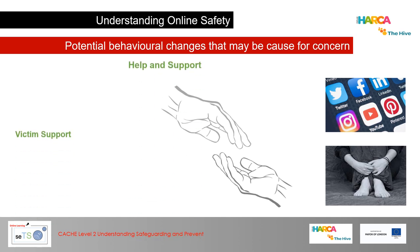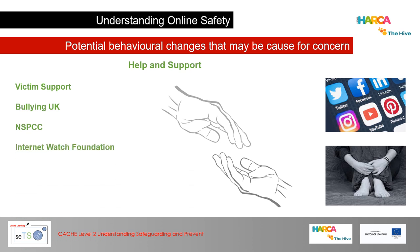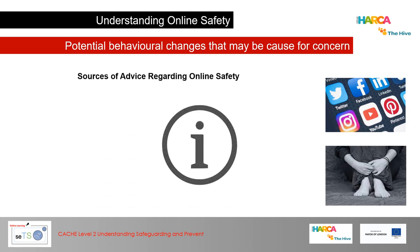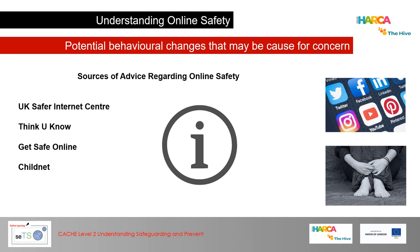Some help and support organisations include Victim Support, Bullying UK, the NSPCC, the Internet Watch Foundation, Revenge Porn Helpline, Childline and the Cyber Foundation — all very good charities to help people in these circumstances. Sources of advice regarding online safety include the UK Safer Internet Centre, Think You Know, Get Safe Online and ChildNet.